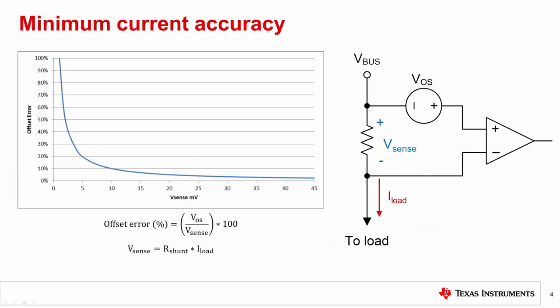Now let me explain how to determine minimum current accuracy for a Current Sensing application. For simplicity, we will only consider the amplifier's offset error in this case and ignore other error sources which will be discussed in later videos. Amplifier Input Offset Voltage or V_OS is the dominant source of error at low load currents and therefore low sense voltages.